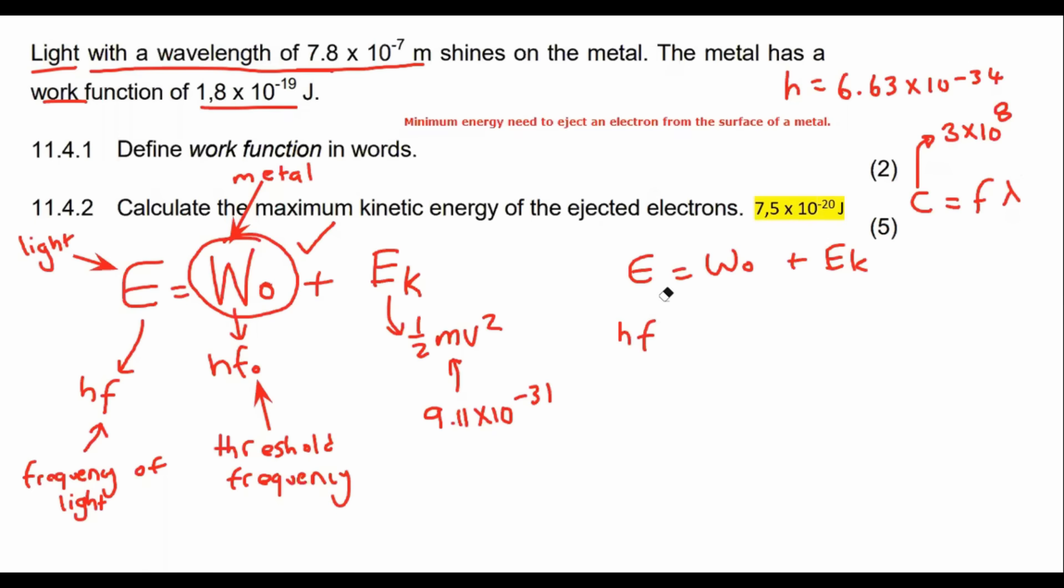What I'm going to do first is say C equals F lambda, so 3 times 10 to the 8 equals F multiplied by lambda, which is 7.8 times 10 to the minus 7. We can then get the frequency. I'm not going to round off completely because it's not my final answer, but I'm going to go at least three decimals: 3.846 times 10 to the 14 Hertz. That is the F of the light, so that would be this F over here in that formula there.